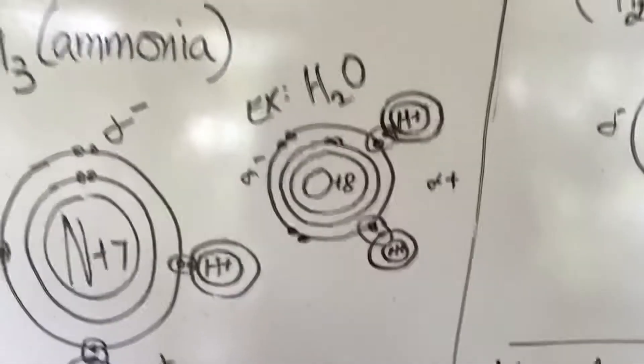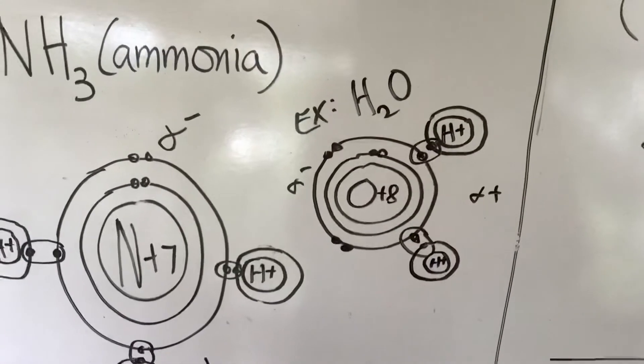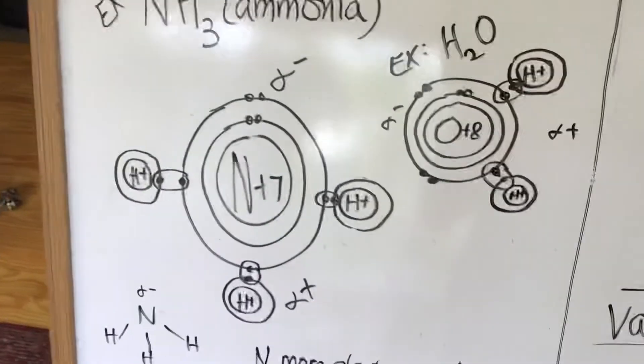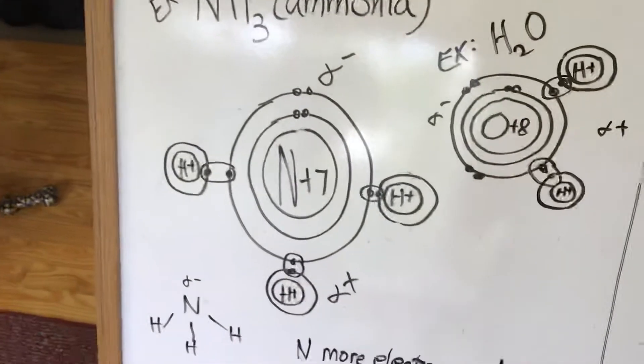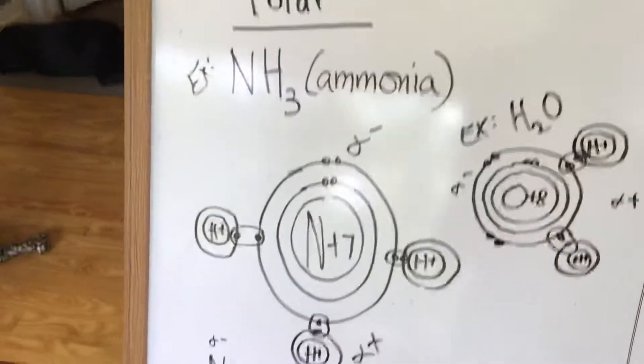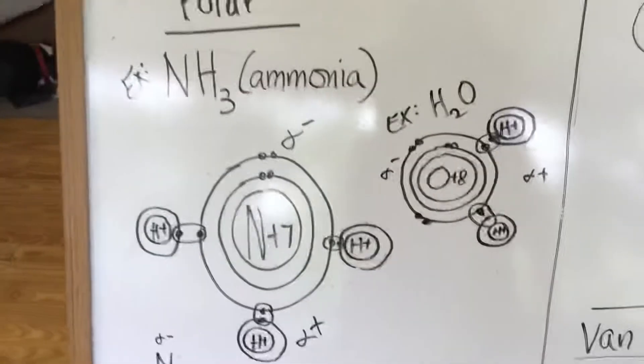So again, a polar covalent bond. Now what that's going to do, these polar covalent bonds form molecules or structures that are then can be attracted to each other via something called a hydrogen bond.